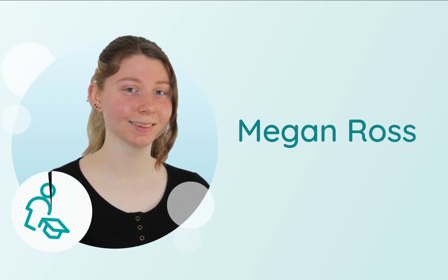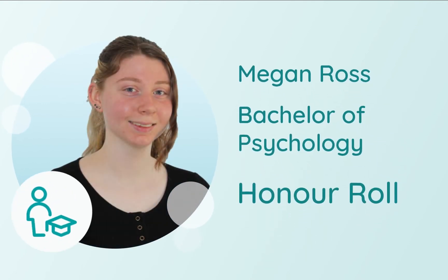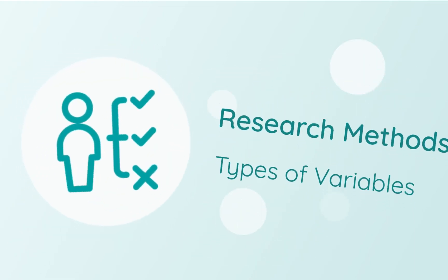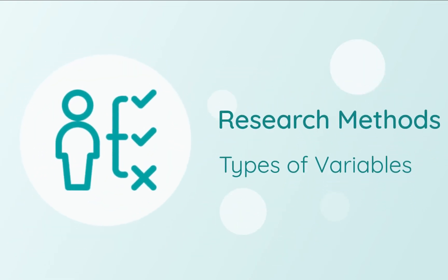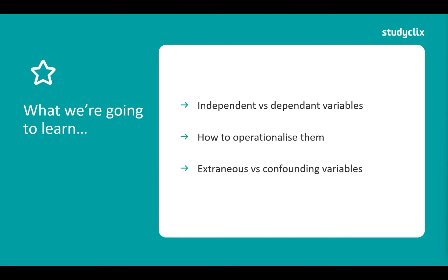My name is Megan Ross and I'm studying a Bachelor of Psychology at Monash University. I was on the VC Honor Roll of Psychology and today we're going to be going through some research methods, specifically different types of variables. In this video we're going to compare independent and dependent variables, talk about how to operationalize them, and then go through extraneous and confounding variables.